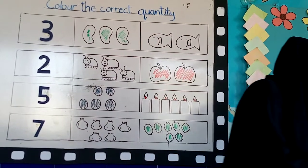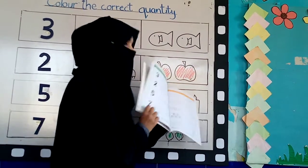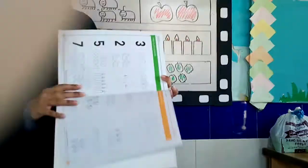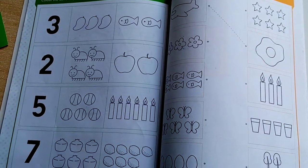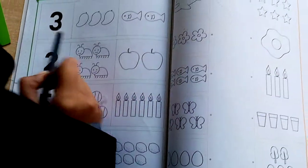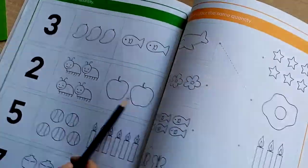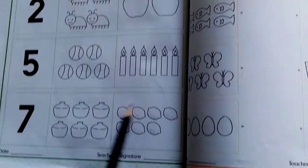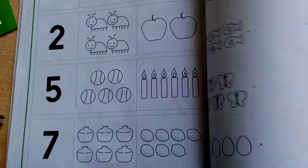Look at page number 32. You have to do in your book page number 32. How many mangoes are here? Three. You have to color the mangoes, the apples, the balls, and the lemons. Okay students? Take care. Jazakallah. Allah Hafiz.